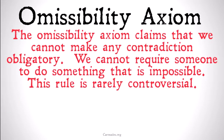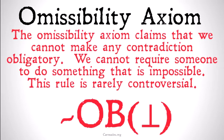The omissibility axiom claims that we cannot make any contradiction obligatory — we cannot require someone to do something that is impossible. This omissibility axiom is going to rarely be controversial because it's rare for us to think that a single obligation can obligate us both to do and not do something.